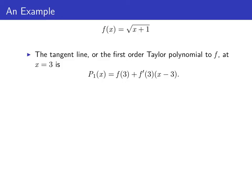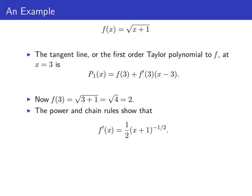So we just need to find f of three and f prime of three. f of three is the square root of three plus one, which is two. The power and chain rules give us the derivative of f of x, and f prime of three is one quarter. That makes p sub one of x equal to two plus one quarter times x minus three. Notice the power of x minus three.